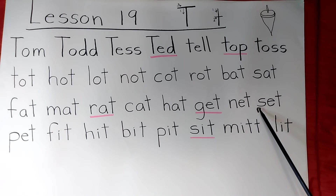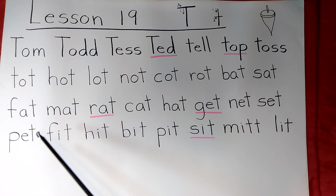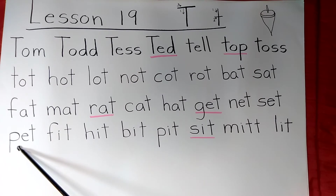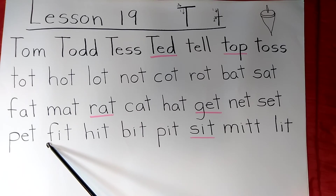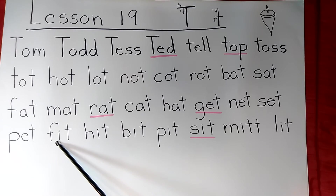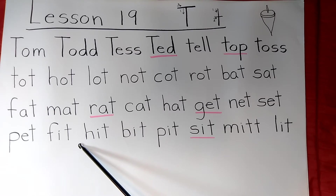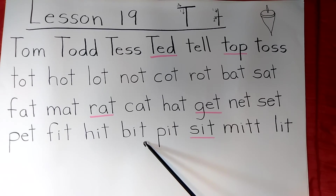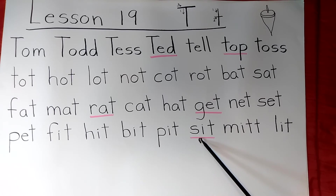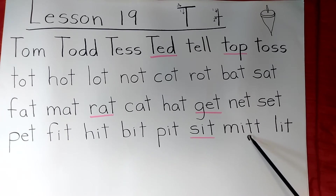And here are the next four rhyming words: get, net, set, pet. And the rest of the words are rhyming: fit, hit, bit, pit, sit, mit, lit.